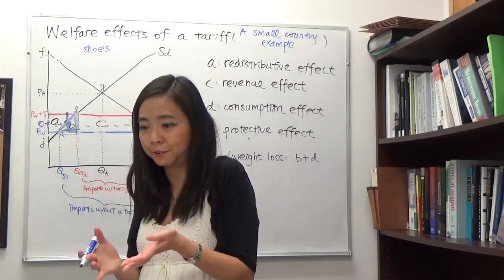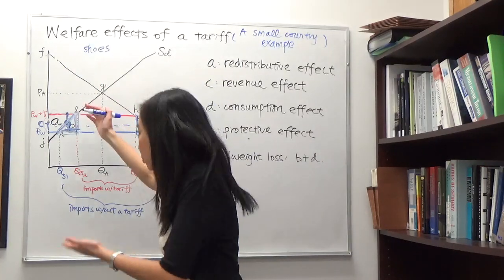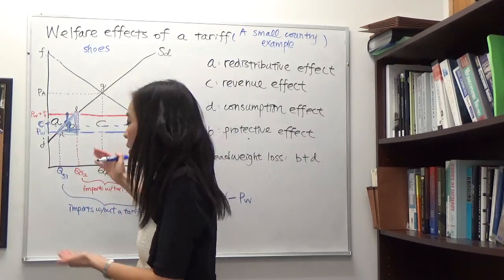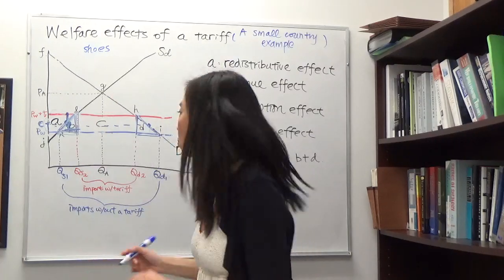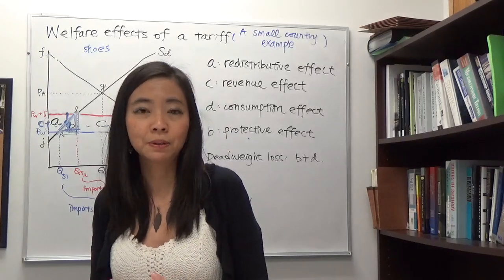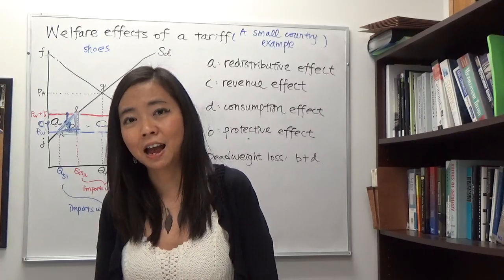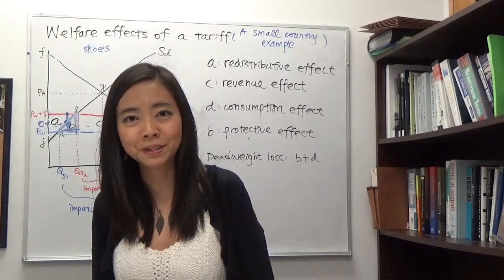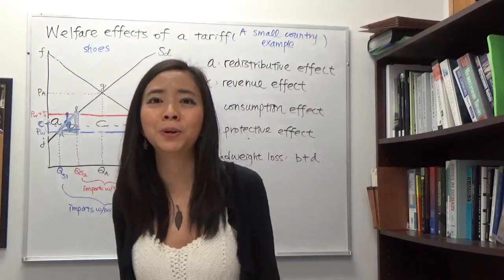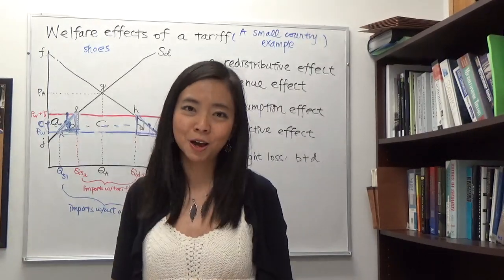Economists do not mind if you cut a piece of pie from consumers and give it to the producer or to the government to build railways or highways — that is just redistribution. What we do mind is the pieces that are lost, like pie burned in the oven. It is like your younger sibling cuts a piece of your apple pie, and after receiving it, drops the rest on the floor — that is a waste. That is the reason tariffs create welfare losses. Thanks for watching and good luck with your studying.